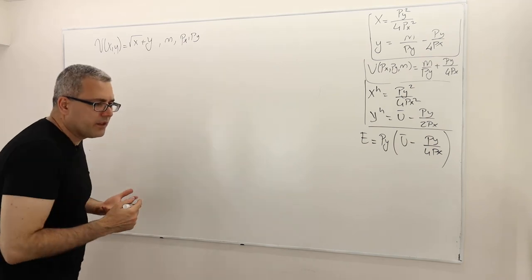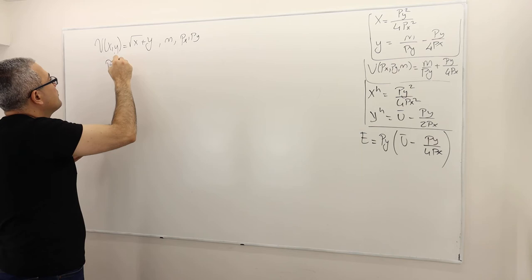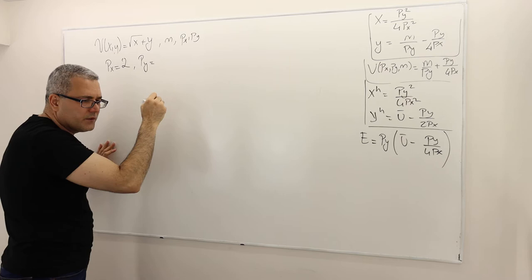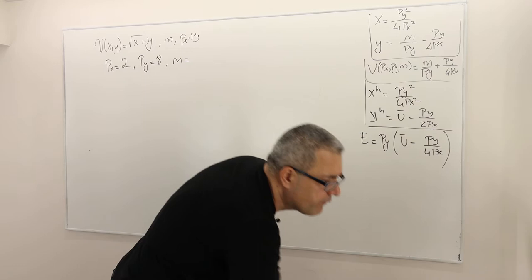We start with a set of prices. In this example, the price of good X is two dollars, the price of good Y is eight, and the income is 64.